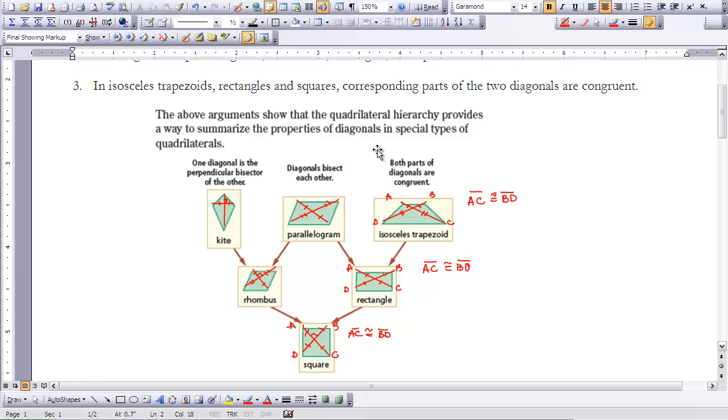And then on the other side here, both parts of diagonals are congruent. So if you look at the isosceles trapezoid, that holds true. Rectangles and squares.